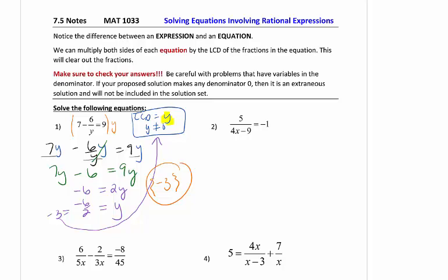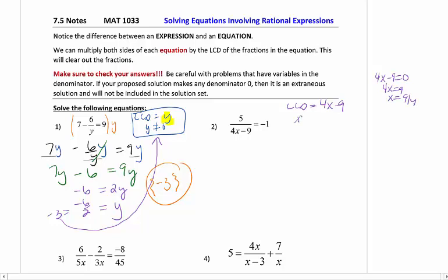Anytime during this video, please stop it, pause it, see if you can follow through on the steps. My LCD for number 2, I only have one denominator again, which is 4X minus 9. That 4X minus 9 cannot equal 0. So I add 9 to both sides, divide by 4. My restrictions are X cannot equal 9 fourths. If I get 9 fourths as an answer, I have to cross it out.